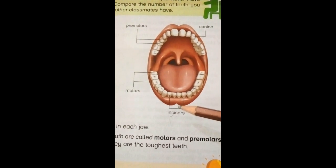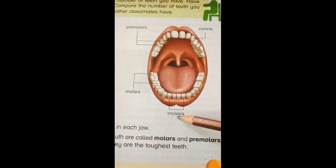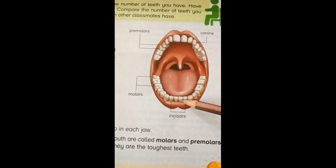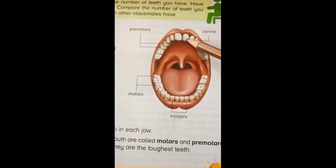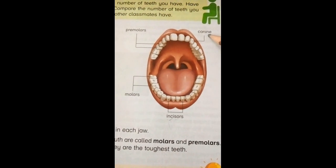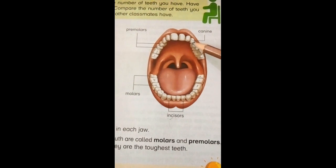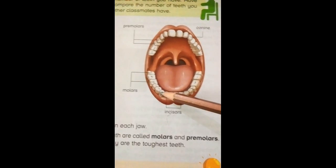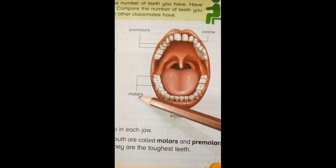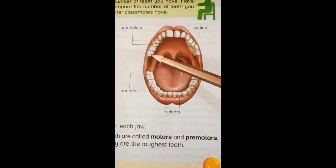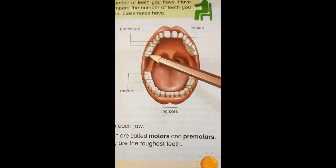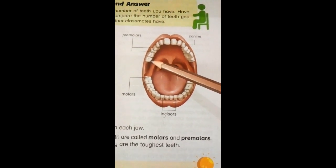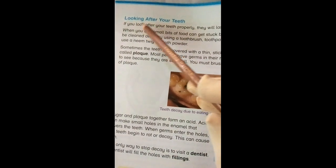To recap: there are four types of teeth. First, incisors — present at the front of the mouth, 4 in the lower jaw and 4 in the upper jaw. Second, canines — pointed sharp teeth, 2 in the upper jaw and 2 in the lower jaw. Third, premolars and molars at the back of the jaws — the toughest and strongest teeth used to grind and chew food.